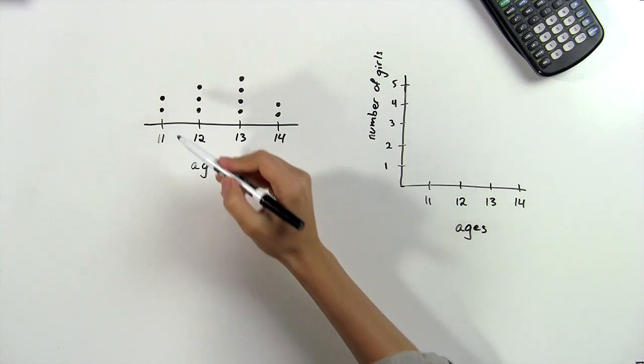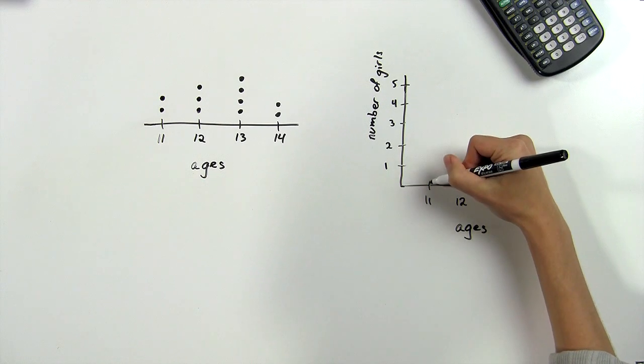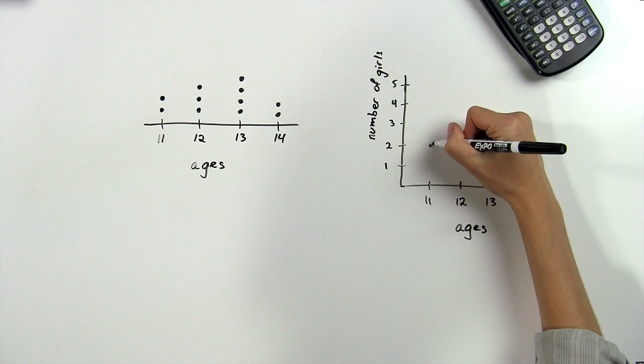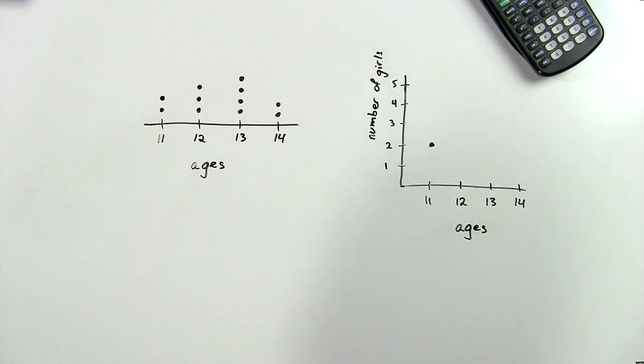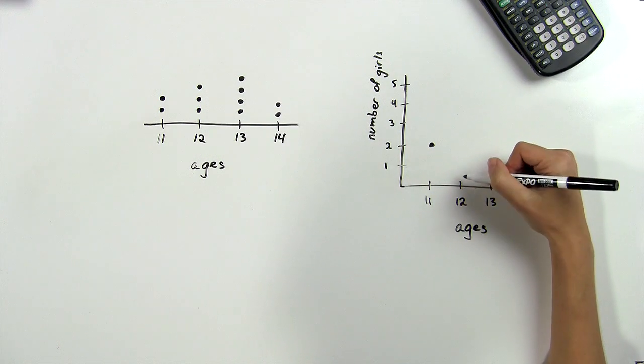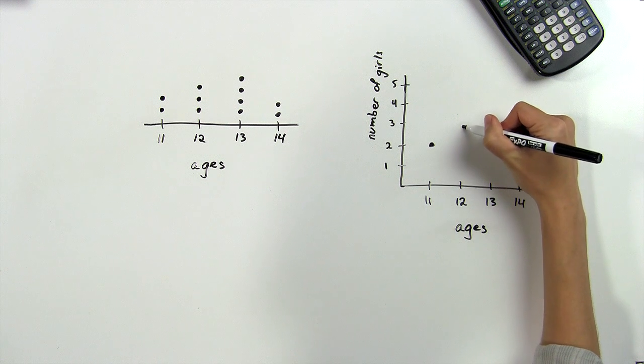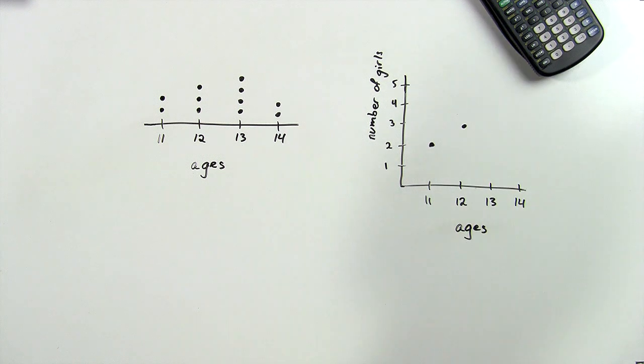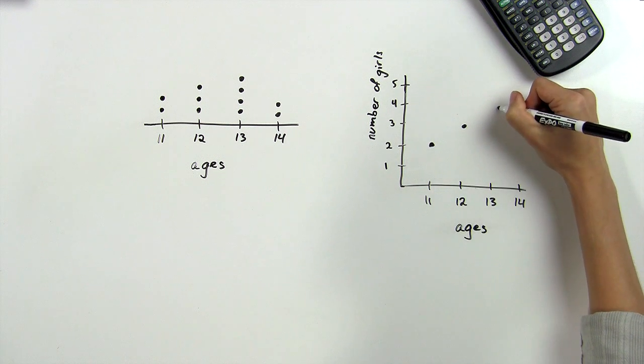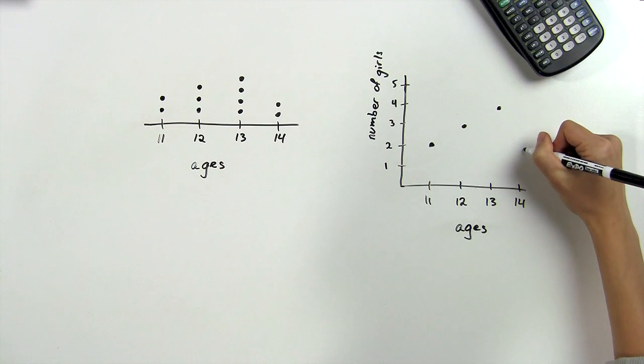Since we have two 11-year-olds, we would go ahead and find the 11 and then go up to the 2 and put one dot there. Three 12-year-olds gives us one dot above the 12 and across from the 3. Then we have four 13-year-olds and two 14-year-olds.